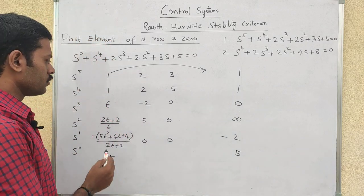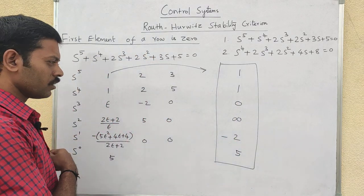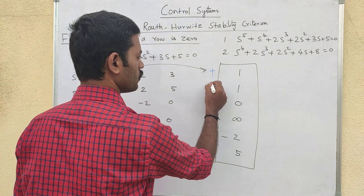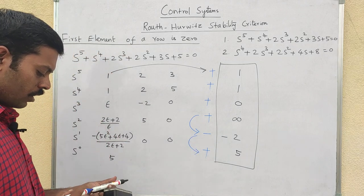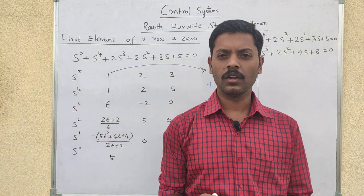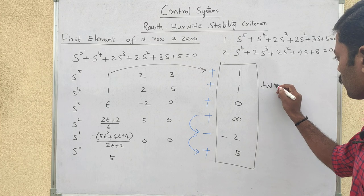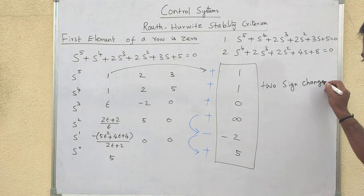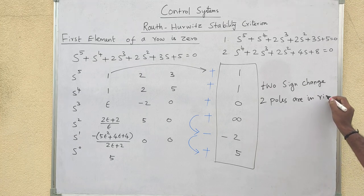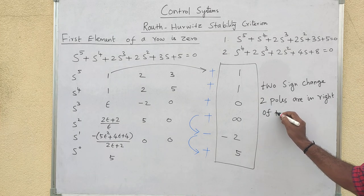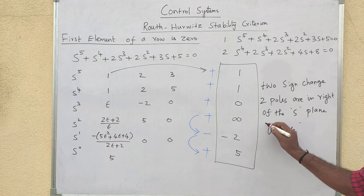Now we look at the first column of the Routh array. The signs in the first column are: plus, plus, plus, plus, minus, plus. There are two sign changes. With two sign changes, two poles are located on the right side of the S-plane, so the system is unstable.